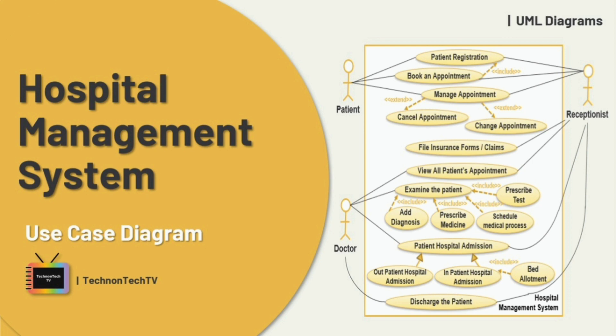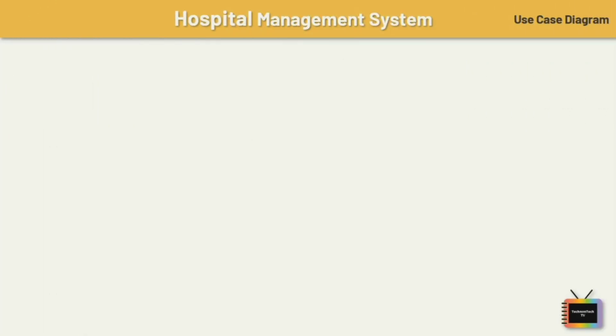A use case diagram can summarize the details of your system's users and their interactions with the system. To build one, we'll use a set of specialized symbols and connectors. The notation for a use case diagram is pretty straightforward — let's discuss it one by one.